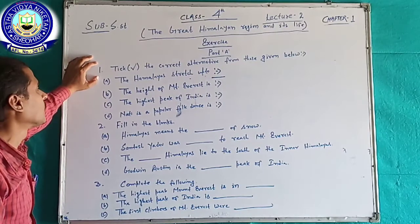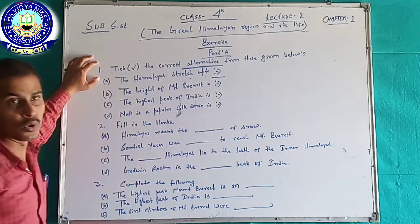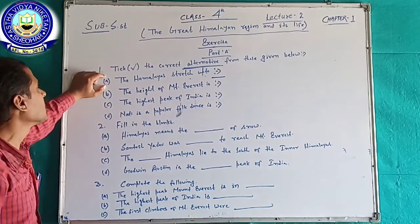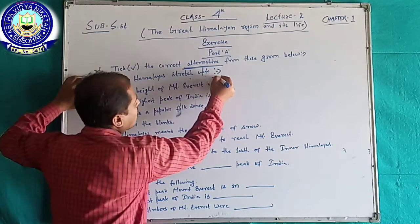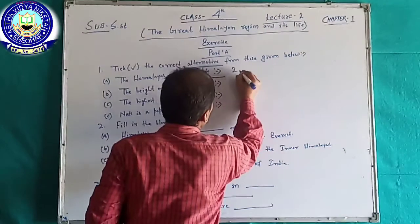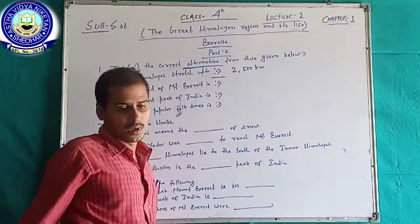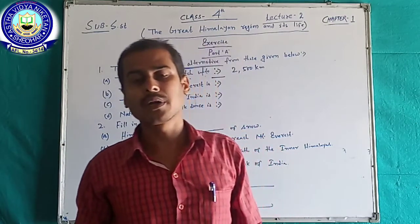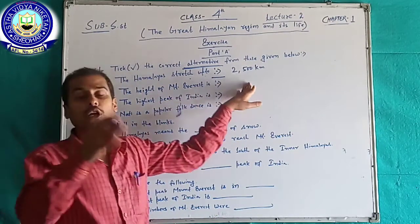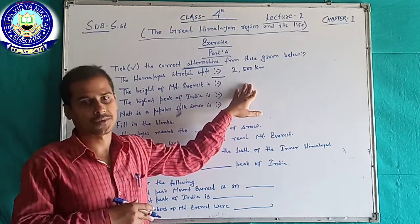In question number one, these are alternative questions where you have been given four options to choose one correct answer. First question part A: The Himalayas stretch up to — its answer is 2500 km. It has stretched up to 2500 km, and its width varies from 400 km in the west to about 150 km in the east.